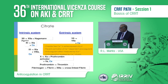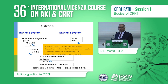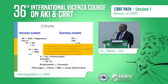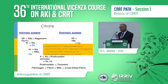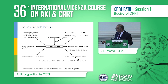When you look at citrate, it works by chelating calcium. Calcium is at every step, whether it's the intrinsic or extrinsic pathway. So by chelating the calcium, you are preventing the clotting cascade from occurring. You can measure the anticoagulant effect by looking at the ionized calcium post-filter and replacing the calcium systemically, since you are removing the calcium-citrate chelate across in the effluent.